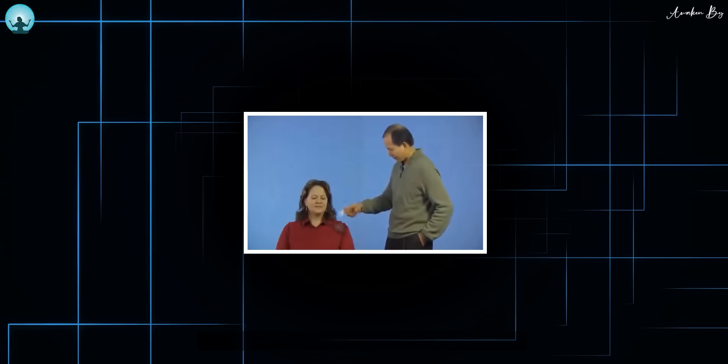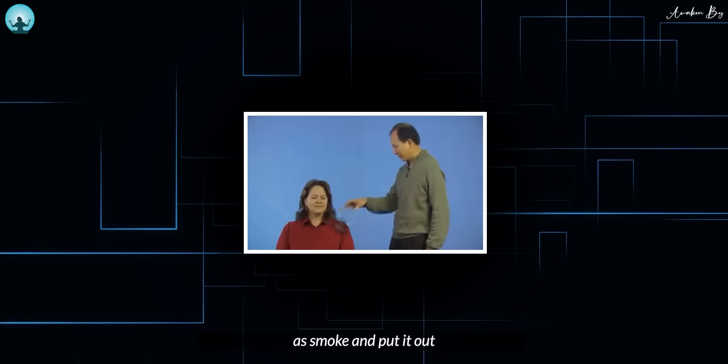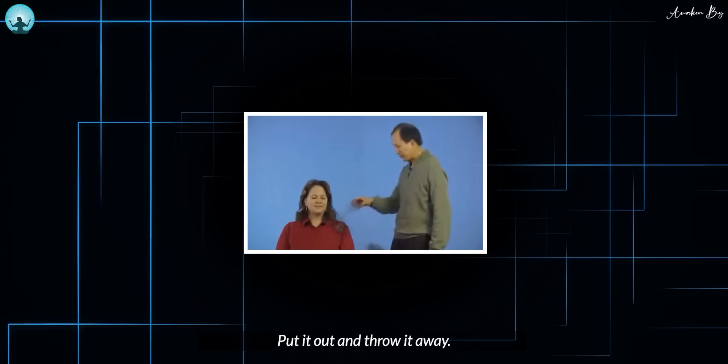After that, now you open your hand, your hands like this, and visualize energy shooting out from your fingers into the shoulder. And take hold of the shoulder and take hold of the blockage as smoke and pull it out and throw it away. Pull it out and throw it away. Pull it out and throw it away.